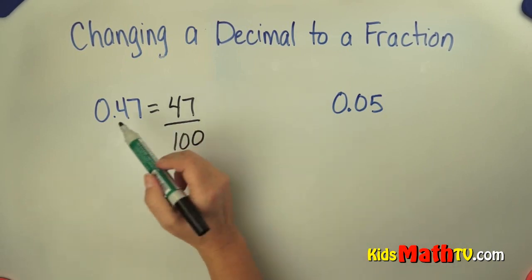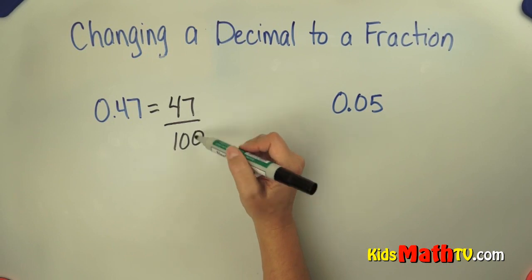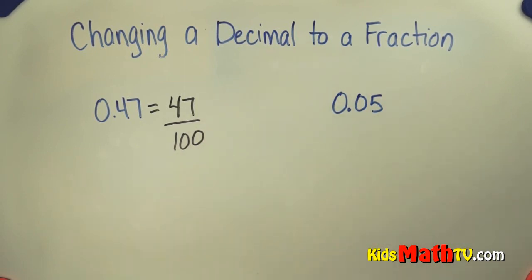And it's as simple as that. In this case, I cannot simplify this, it doesn't simplify at all. 47 and 100 are not divisible by any number that's the same.